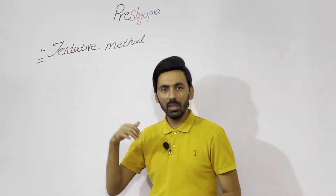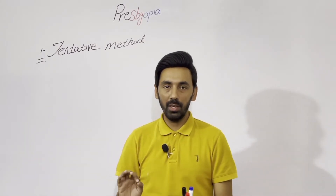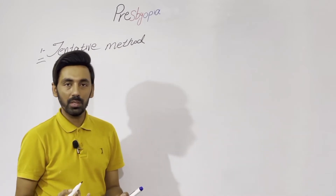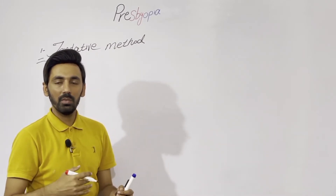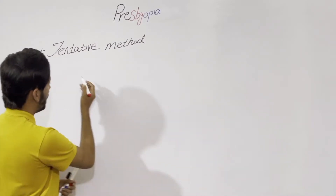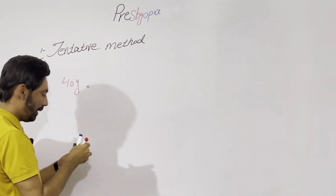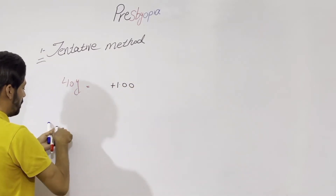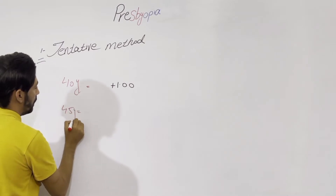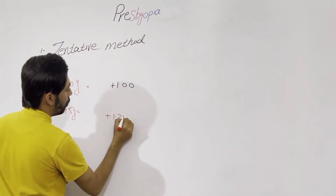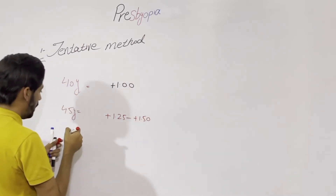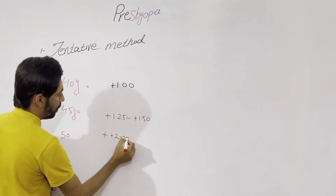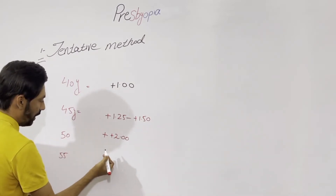The tentative method is age-related. Presbyopia starts at the age of 40 years. At age 40, the expected near add is plus 1.00. At age 45, it would be plus 1.25 to plus 1.50. At age 50, the near add would be plus 2.00. At age 55, the expected near add value would be plus 2.25 to plus 2.50.